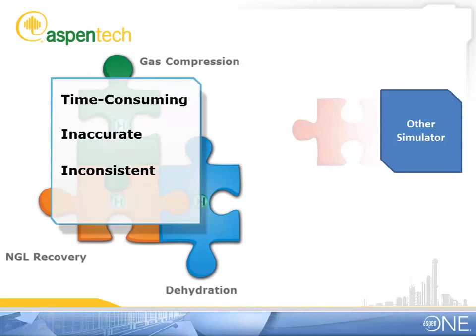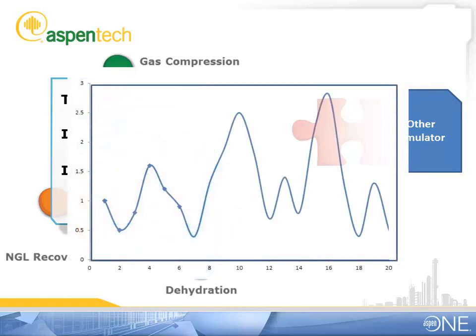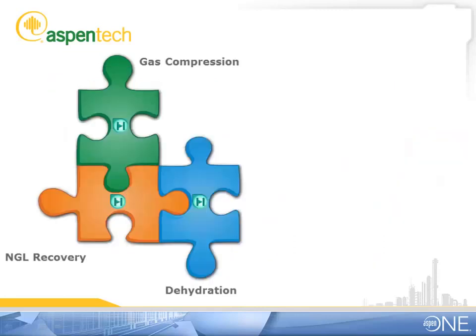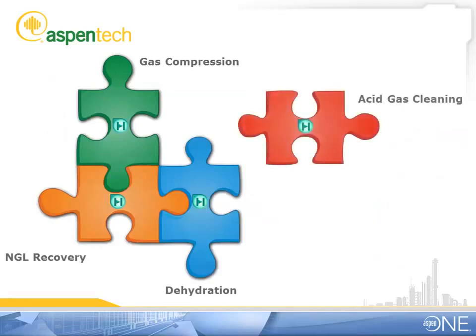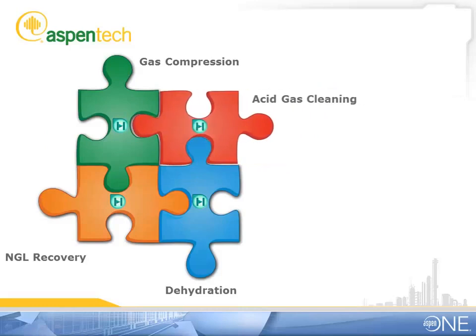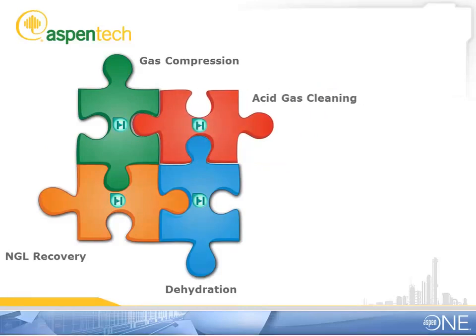It would be much better if I could do it all in HiSys, and honestly, without a predictive model, we won't be able to extrapolate for the client's changing feeds. Oh, you don't need to do that. Just use HiSys V8-3. It has a new acid gas cleaning capability that you can use in the existing case, and that will make it much faster. Besides, it's so easy to use.